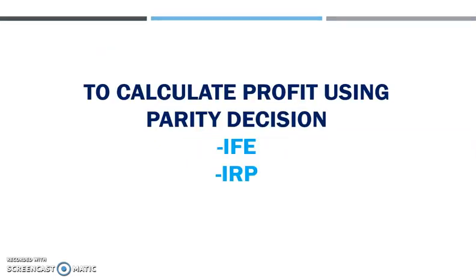After you know about these five parity conditions — we have PPP, FE, IFE, IRP, and UFR — you need to know only two theories or only two parities that you need to come up with decisions. One is the international Fisher effect, where to borrow and where to invest. In the calculation, after you come up with the decision, the question may extend and ask you to calculate the profit you may earn through your decision on where to borrow and where to invest under IFE and also interest rate parity.